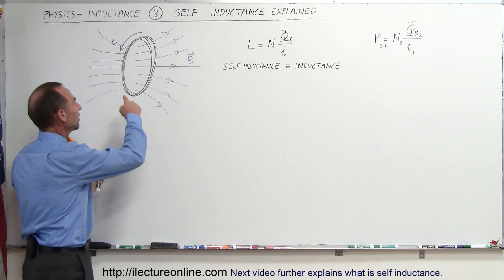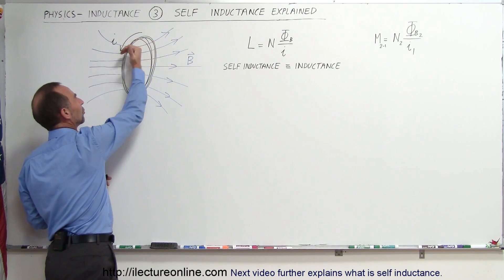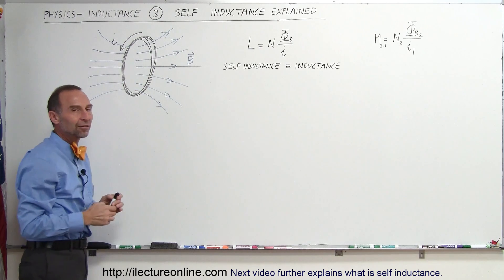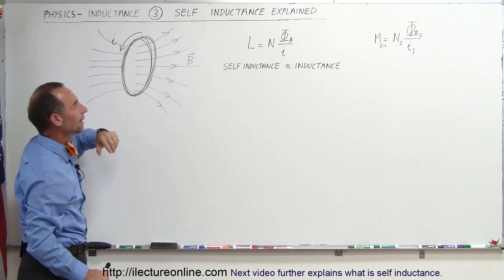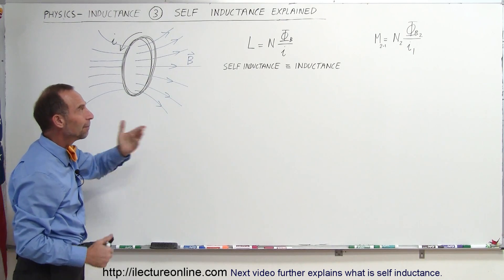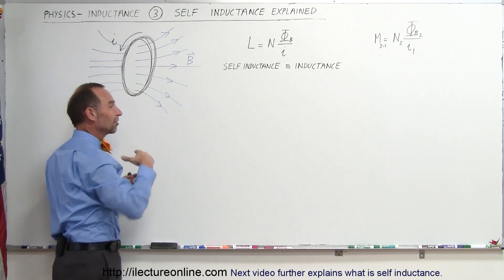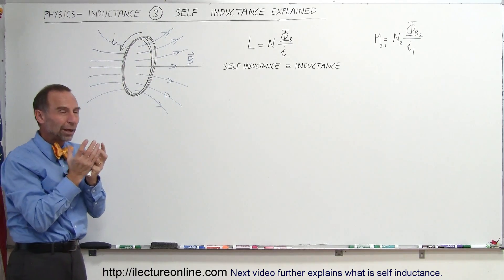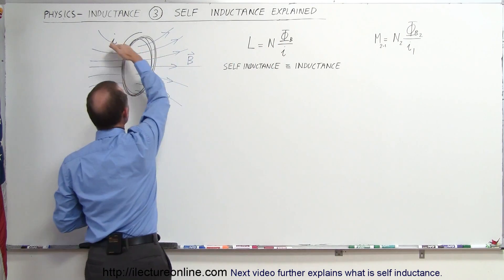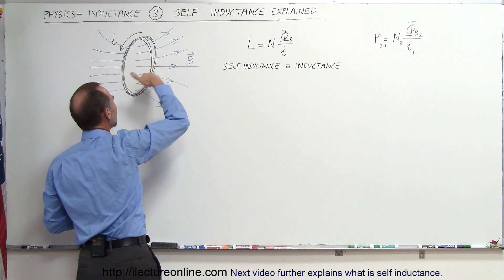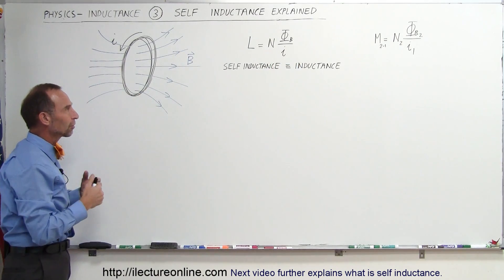Now let's start with a steady-state current. Let's say we have a steady-state current in this direction. Take our fingers in the direction of the current — our thumb points in the direction of the magnetic field — so we can see how we have magnetic flux going through the loop like that. Self-inductance is defined by, first of all, the number of turns in the loop, because obviously the more turns you have in the loop, the greater the effect. The amount of flux going through the loop as a function of how much current drives that flux.